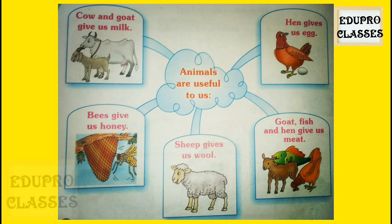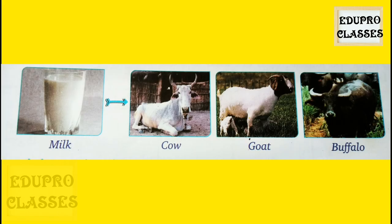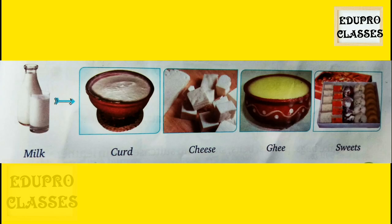कि animals हमारे लिए कितने उप्योगी होते हैं। So now let's start. Cow, buffalo, and goat give us milk. बच्चो दूध से बहुत सी चीज़े बनती है जैसे Paneer, Cheese, Butter, Curd, Ghee, Sweets, etc.